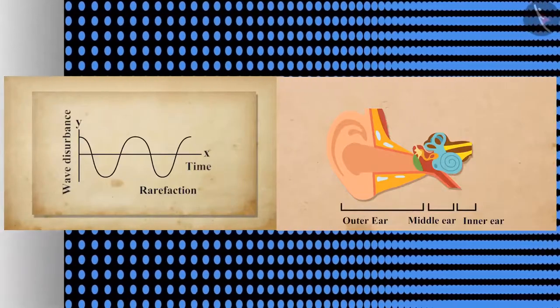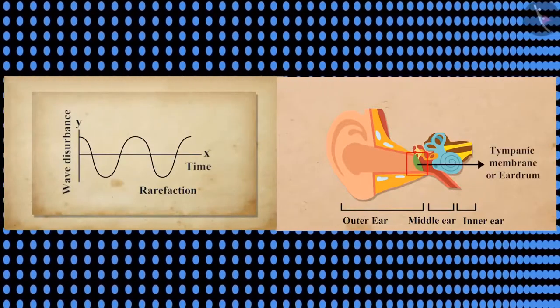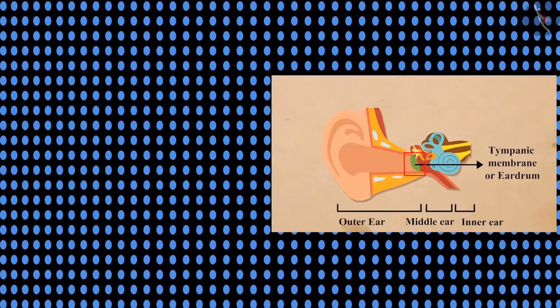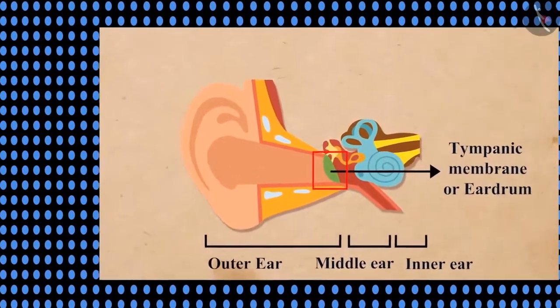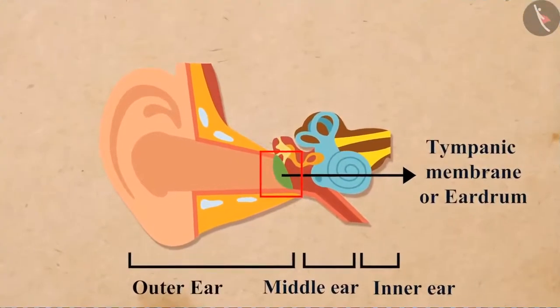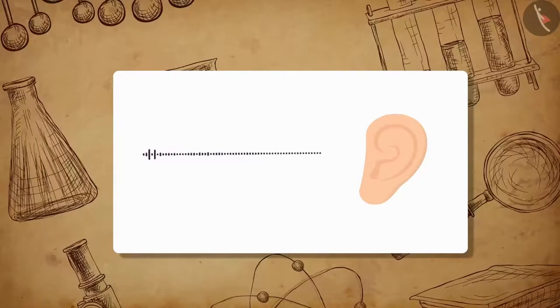Similarly, when a rarefaction of the medium reaches the eardrum, it forces the eardrum outward. In this way, vibrations are produced by the sound in the eardrum.